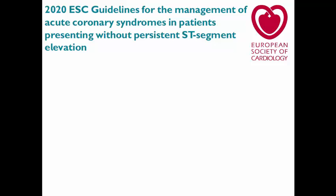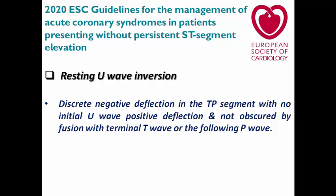Since 2020, ECG guidelines for non-ST elevation acute coronary syndrome have emphasized the importance of resting U wave inversion and put criteria for them. It is described as a distinct negative deflection in the TP segment with no initial positive component — meaning the U wave should be entirely negative, not obscured by fusion with the terminal T wave or the following P wave. So we are speaking about a distinct U wave which is completely negative and separated from the preceding T wave and the following P wave. It usually occurs in leads I, aVL, V4, V5, and V6.